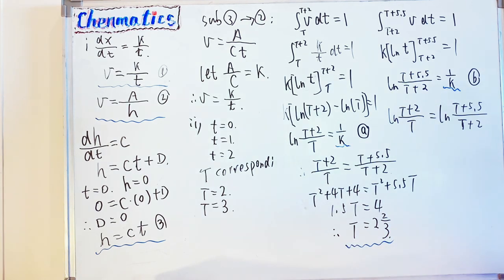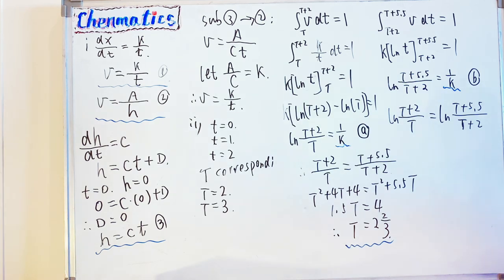T equals 2 and two-thirds means it had been snowing 2 hours and 40 minutes by 6 a.m., so the snow started at 3:20 a.m. If you found this video useful, please subscribe, leave a like, and let me know what other topics you'd like me to explain.